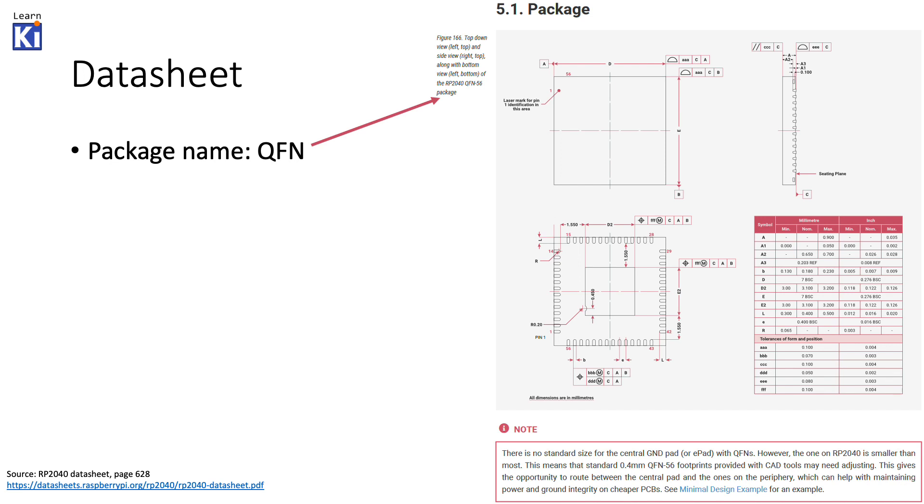So, you will need the datasheet of course. And in this you will find the package name. This is what decides which option you choose in the wizard. The QFN in this case. The table of its dimensions. You need it.